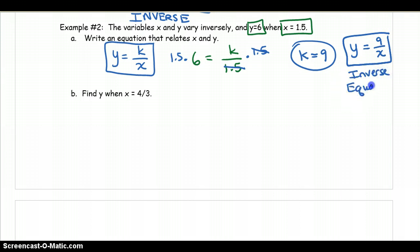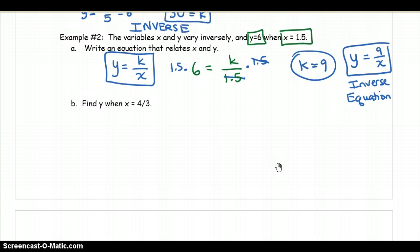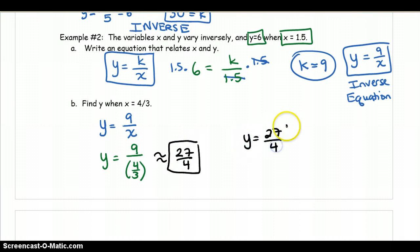Notice that the equation, similar to our models that we've done in the past, have two variables. In this case y and x. Then in part two it says, find y when x equals 4 thirds. Well now that we have an inverse equation, which happens to be y equals 9 over x, that's pretty simple to solve, because they're telling us that x is 4 thirds. And when I use my calculator to get that, we end up getting 27 over 4. So y equals 27 over 4.